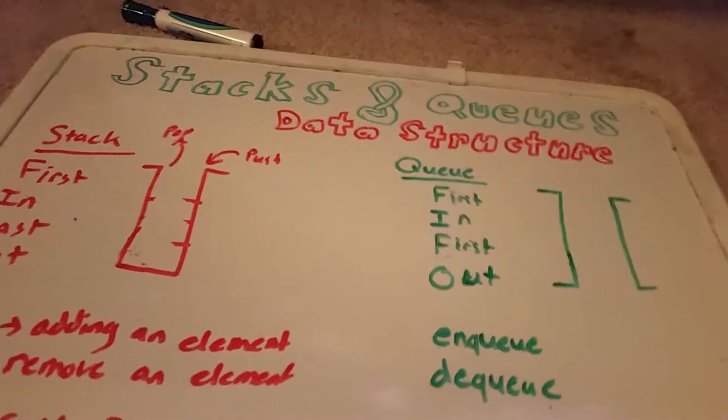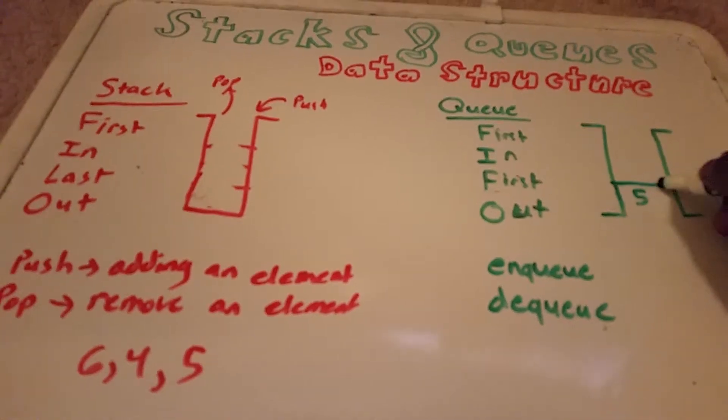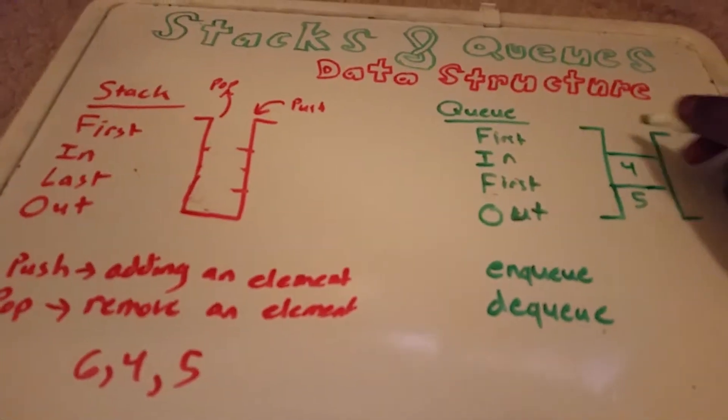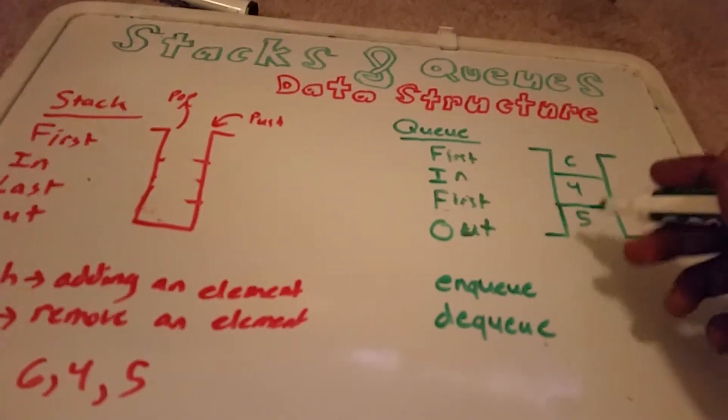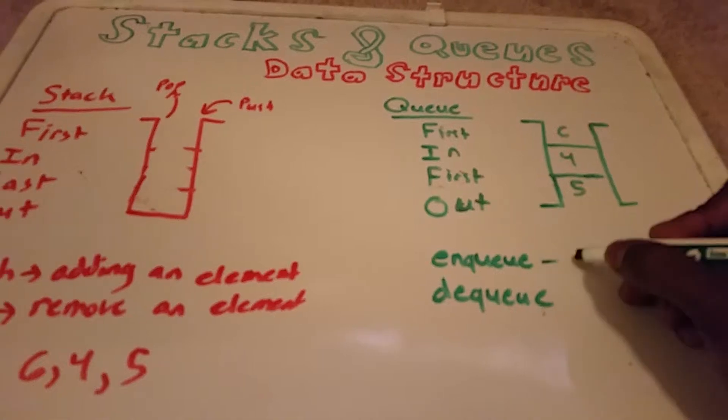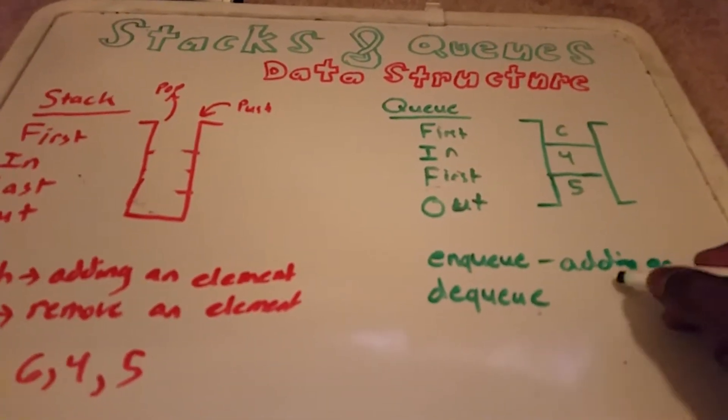So in the case of us having 5 and 4 and 6, our enqueue here, it stands for adding an element.